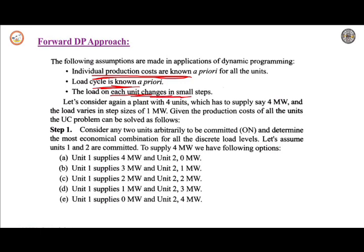The load on each unit changes in small steps. With this assumption, let us take an example. Consider a plant with 4 units. These 4 units have to supply 4 megawatts, and the load varies in step size of 1 megawatt from hour to hour. Given the production cost of all the units, the unit commitment problem can be solved with the help of this forward dynamic programming approach.